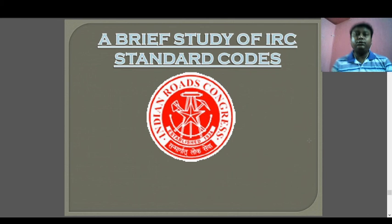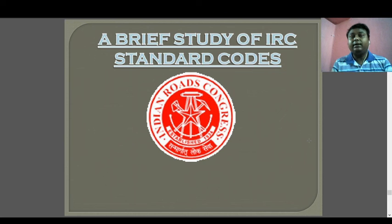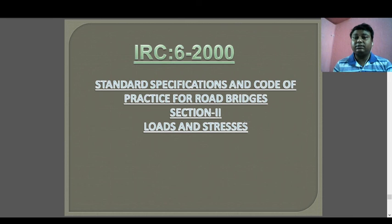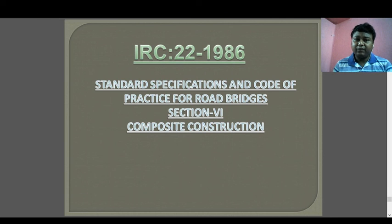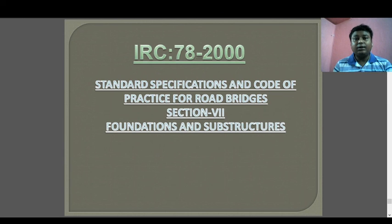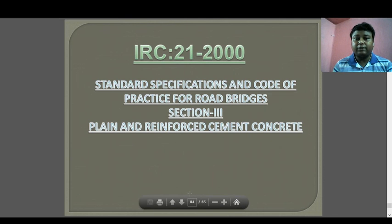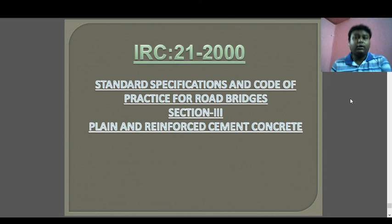Regarding IRC codes: bridges are designed as per loading patterns AA, A, and B. The codes used are: IRC-5 (standard specification and code of practice for road bridges, Section 1 — general features of design), IRC-6 (Section 2 — loads and stresses), IRC-22 (Section 4 — composite construction), IRC-78 (Section 7 — foundation and substructure), IRC-83 (bearing design), and IRC-21 (plain and reinforced cement concrete). These codes are used for design of various components including superstructure, substructure, traffic load, and bearings.